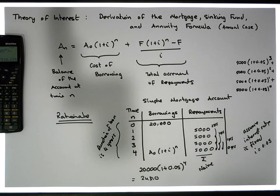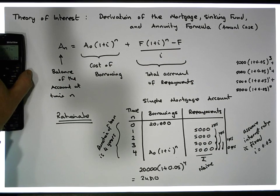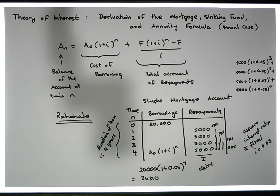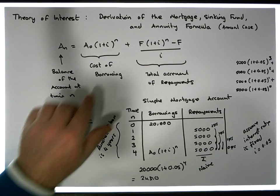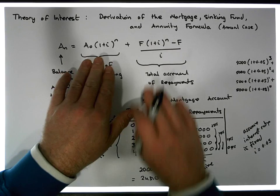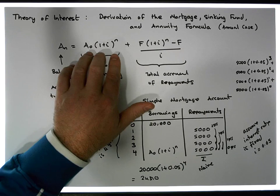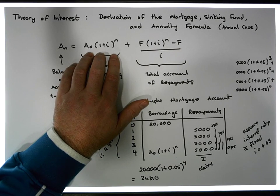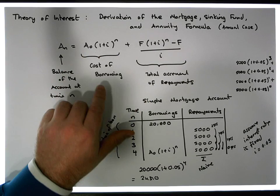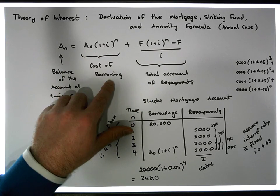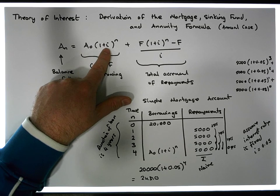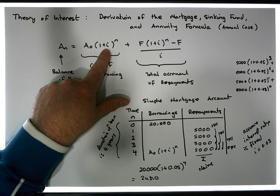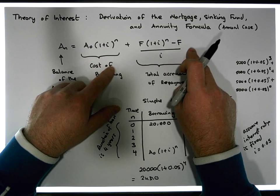The right-hand side of the formula — the first term — is straightforward: the cost of borrowing is a simple compound interest calculation. Now let's have a look at deriving the second part.